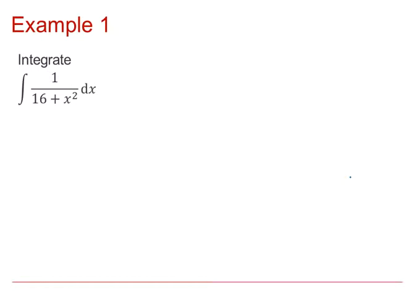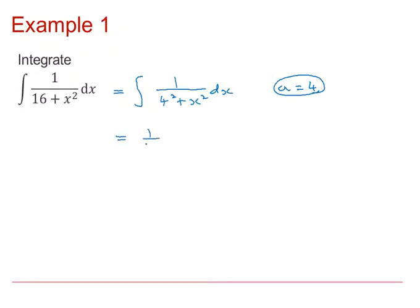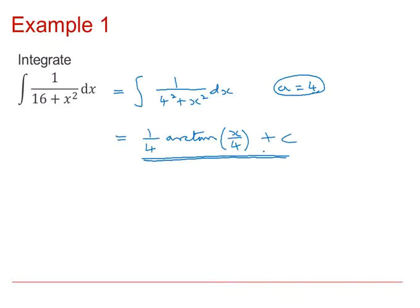In this example, we need to integrate 1 over 16 plus x squared dx. It's very important to get it in the correct form before we start. I would write 16 as 4 squared, so we've got it in the appropriate form. Note that a is 4, then we can quote our result: the integral of 1 over 4 squared plus x squared dx equals 1 over 4 times arctan(x/4), plus c.